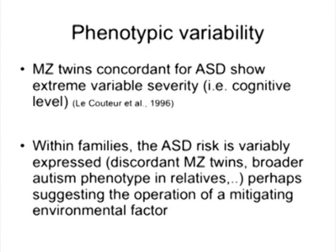The same argument applies to the broader autism phenotype, and to the fact that discordant MZ twin pairs also show different phenotypes — either autism or milder difficulties — which can also be seen in relatives. The argument is that maybe there are other factors than genes which explain the phenotype. I'm not saying necessarily that I endorse these arguments, but they are put forward to make a case for environmental studies.